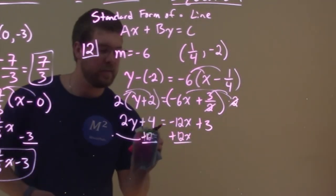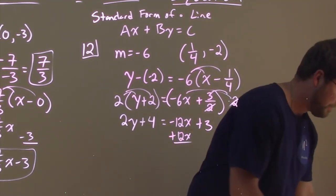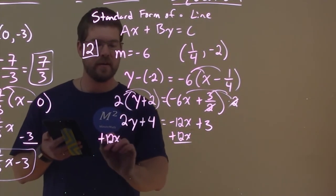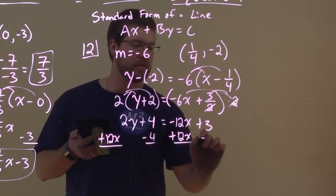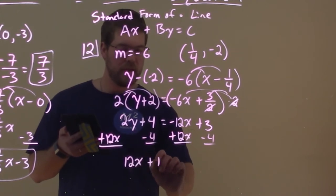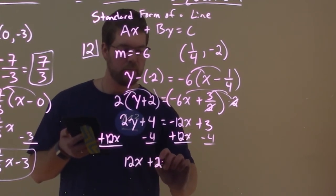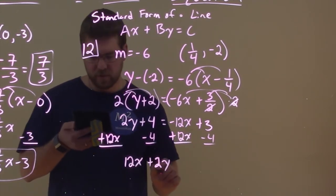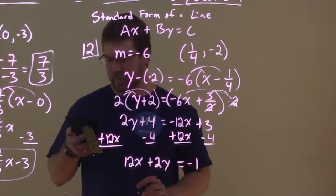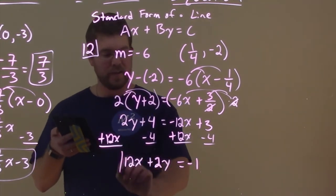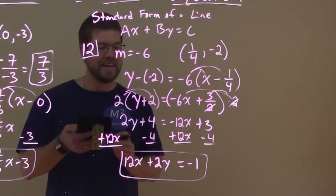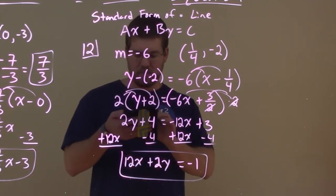So we're going to add a 12X over here. And then we're going to subtract a 4 to both sides here. So now we have 12X plus 2Y here equals 3 plus a negative 4 is a minus 1. And now we have our answer here in standard form, 12X plus 2Y equals negative 1.